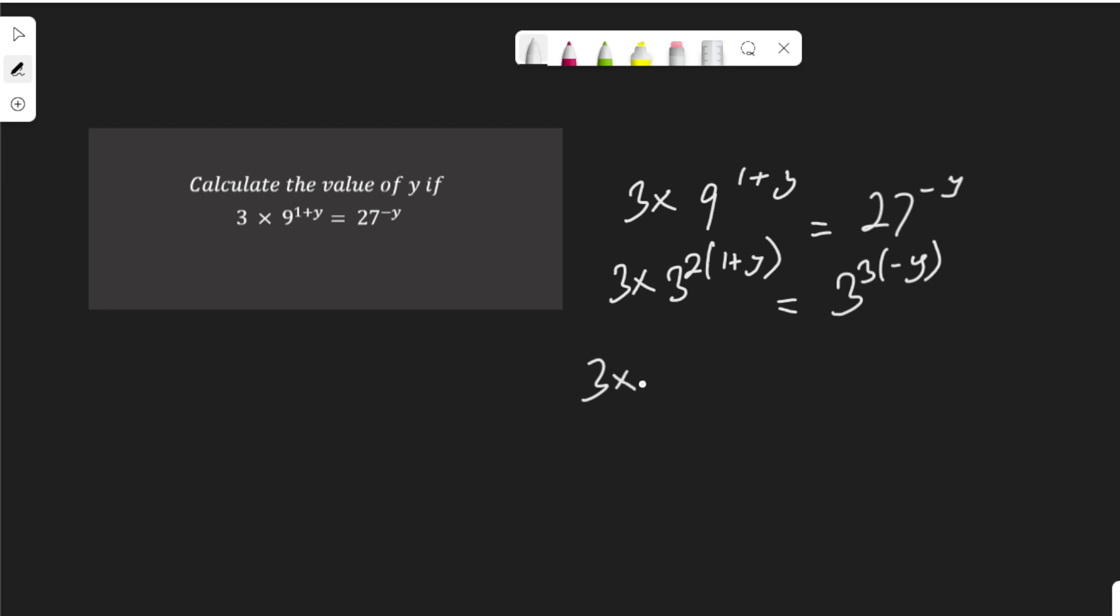Then 3 multiplied by 3 to the power of 2 times 1 plus y, that's 2 plus 2y, equal to 3 to the power of negative 3y.